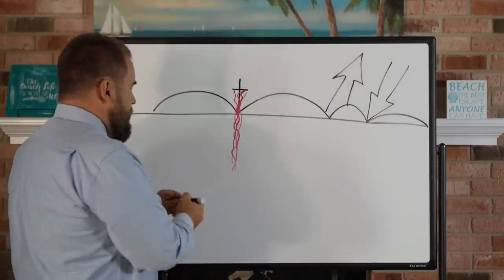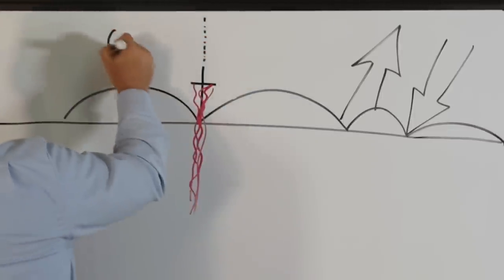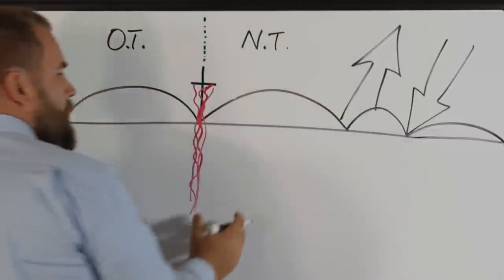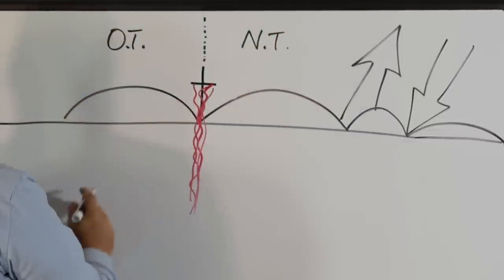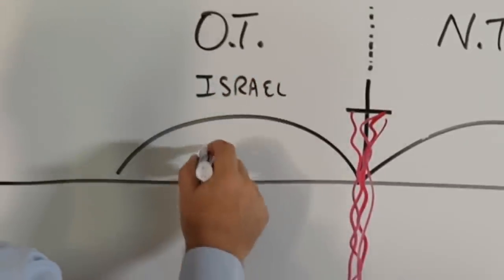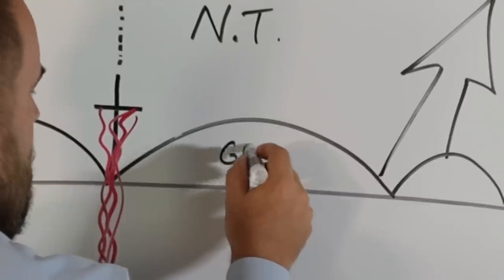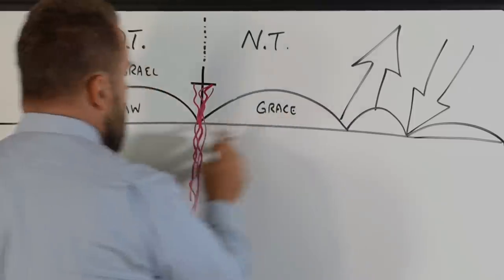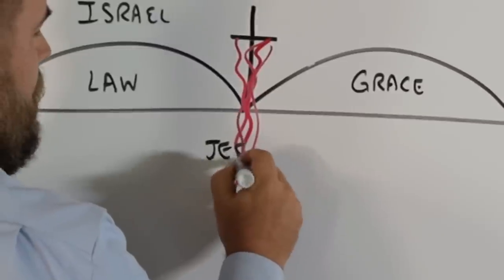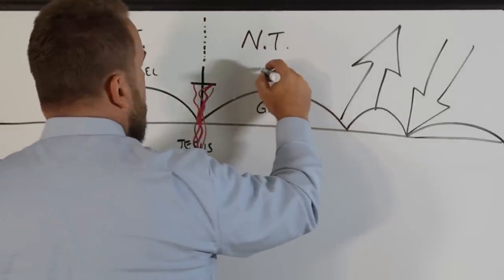The Bible says in Hebrews that the death of a testator is what causes a New Testament. So we see the Old Testament and the New Testament. The New Testament starts with the death of a testator. Before Jesus died, God was dealing with the nation of Israel — that was the law, the law of Moses. But over here we have grace. The Bible says the law came by Moses, but grace and truth through Jesus Christ. So this is Jesus Christ, and this is the most basic division in the entire Bible.